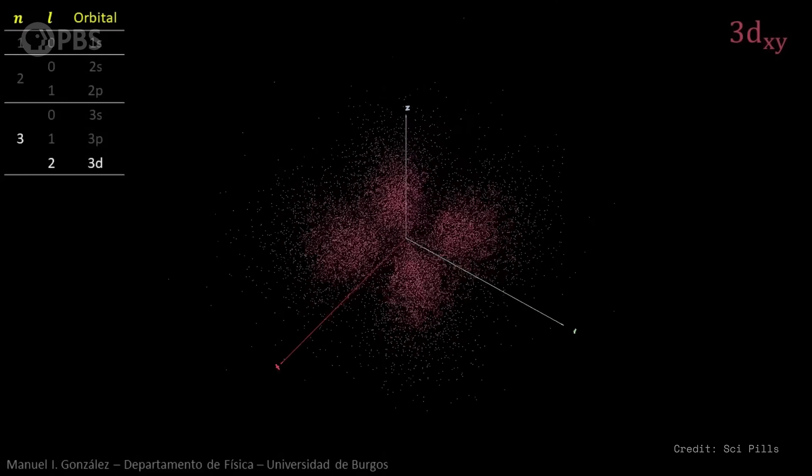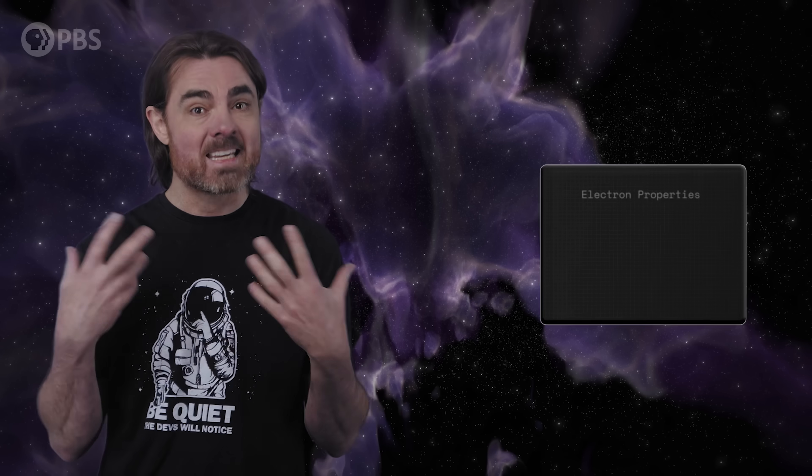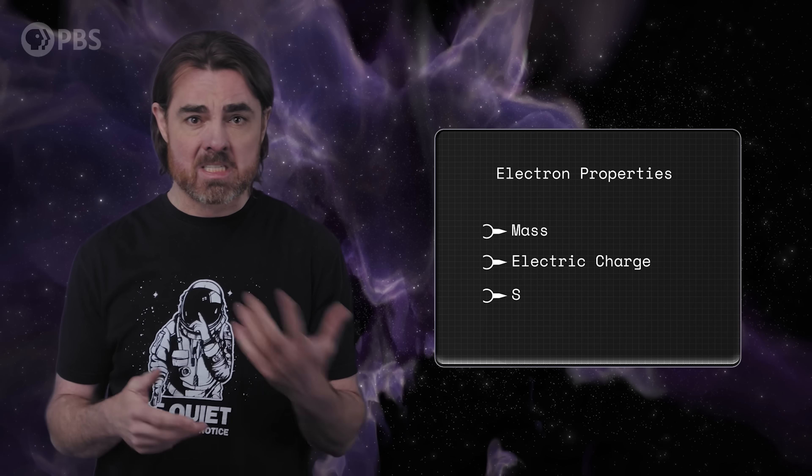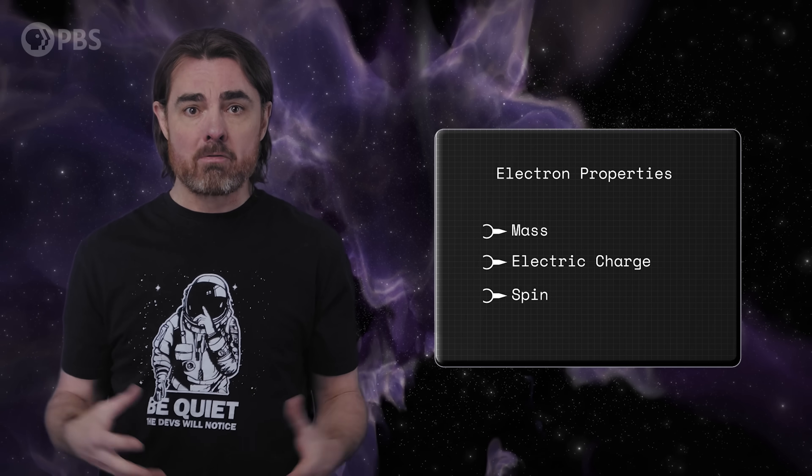But are these wave functions really what an electron looks like? These wavy structures seem more intuitive for something like the photon, which is literally a wave in the electromagnetic field, and whose most important properties like frequency and wavelength can be captured in wavy terms. But an electron has mass, it has electric charge, it has spin.